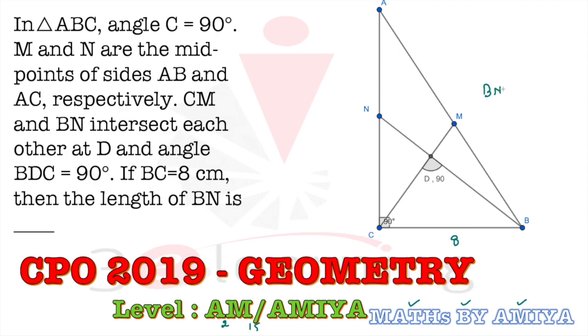So the BN direct formula is nothing but BC into root 6 by 2. So we have nothing but 8 into root 6 by 2 is nothing but 4 root 6 is the answer. I hope it is okay. No, it's not okay because I have given the direct formula. Let's solve it step-wise step process.